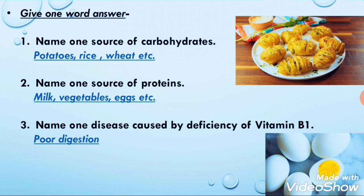Next: name one source of protein. As I told you before, milk is a source of protein and is part of a balanced diet. You can also write eggs or vegetables — anyone that is rich in protein as a nutrient.